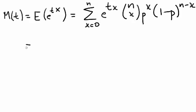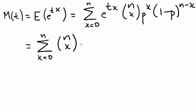Now let's manipulate that a little bit. We have x is 0 to n of n choose x, and then let's bring together that e to the tx and p to the x,